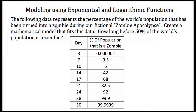Let's try a second example. Here we have data representing the percentage of the world's population that has been turned into a zombie during our fictional zombie apocalypse. Create a mathematical model that fits this data, and then determine how long before 50% of the world's population is a zombie. At day three, a very small percentage is a zombie, but by day 14 about 42% of the world's population is a zombie, and by day 30 almost the entire world has been turned.